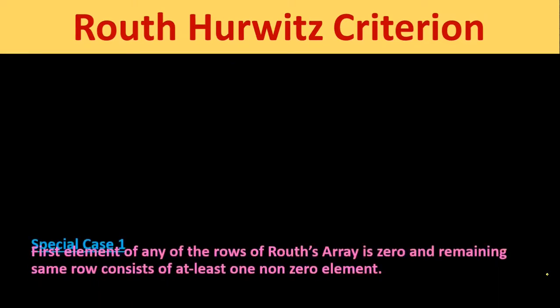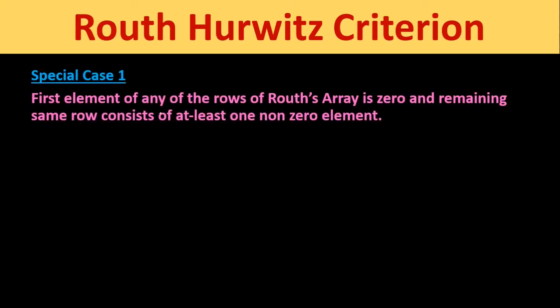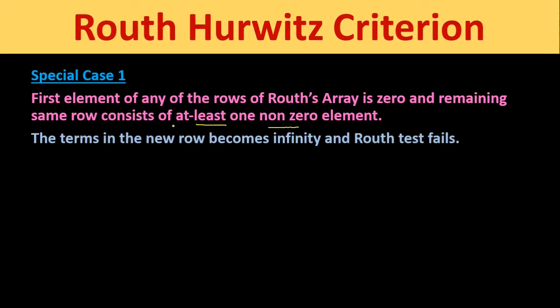In this lecture we will discuss Special Case Number 1 for Routh-Hurwitz stability criteria. Special Case 1 is when the first element of any row of Routh's array becomes zero and the remaining row consists of at least one non-zero element. In that case, the terms in the new row become infinity and the Routh test fails.